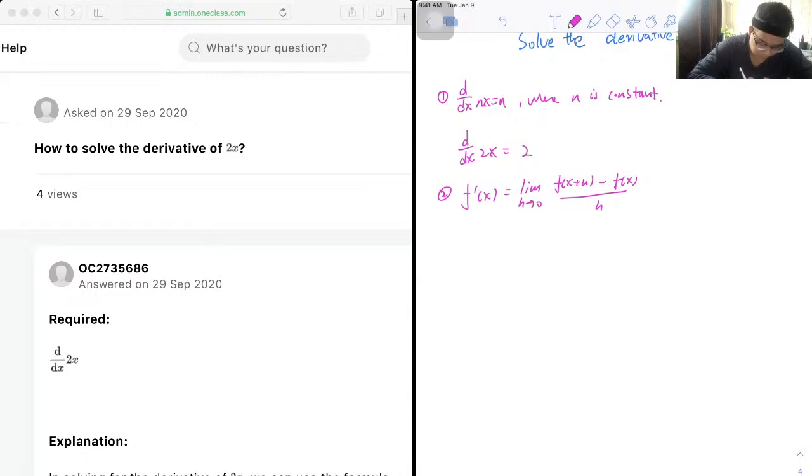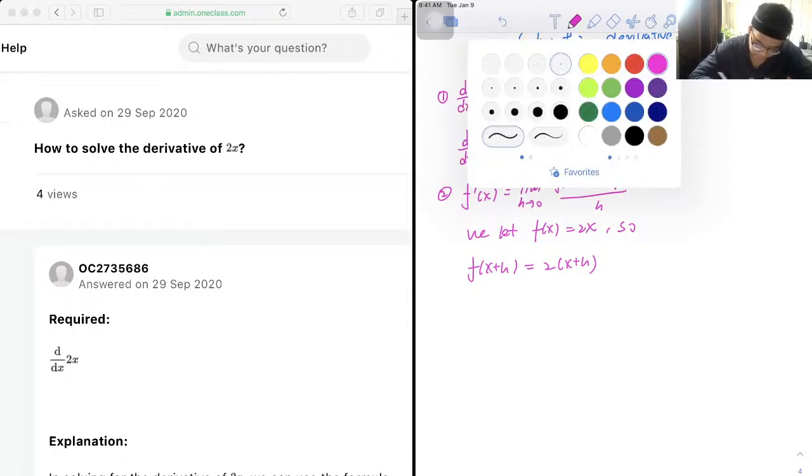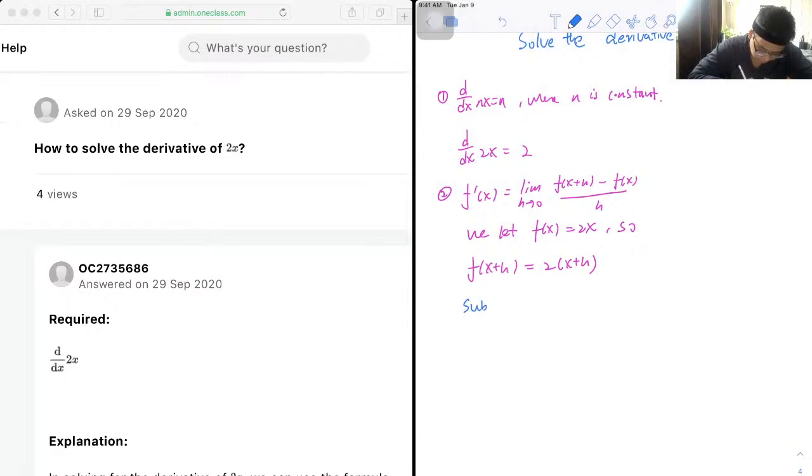And then we let f(x) equal 2x. So let f(x+h) equal 2 times (x+h). And we're substituting this to the formula value.